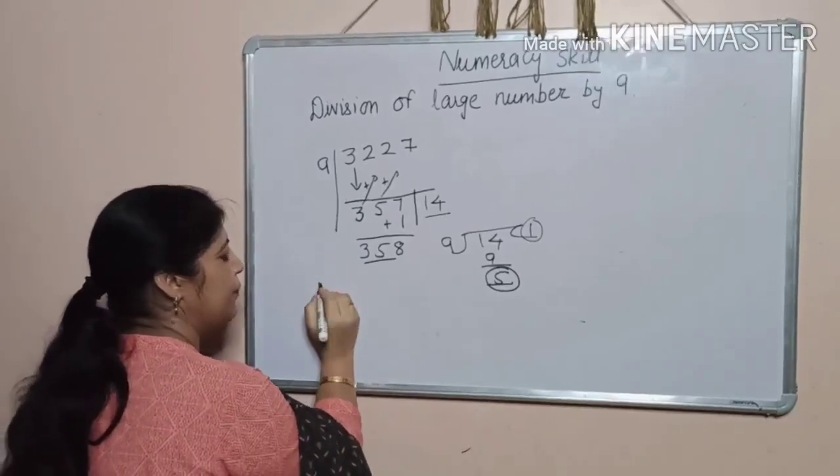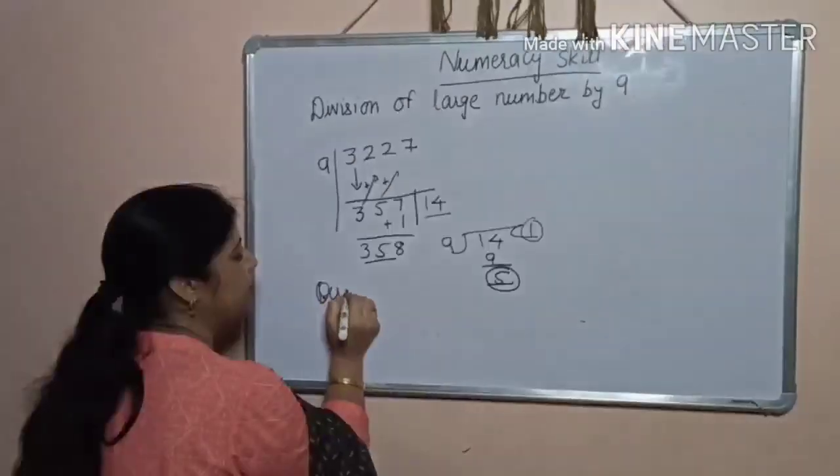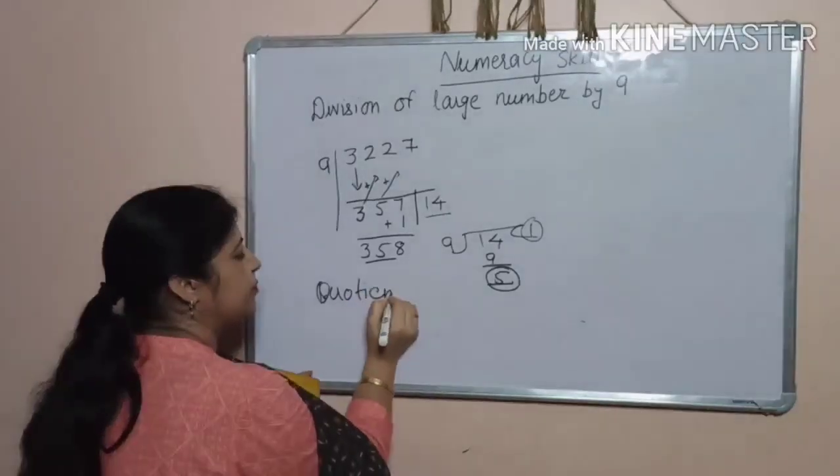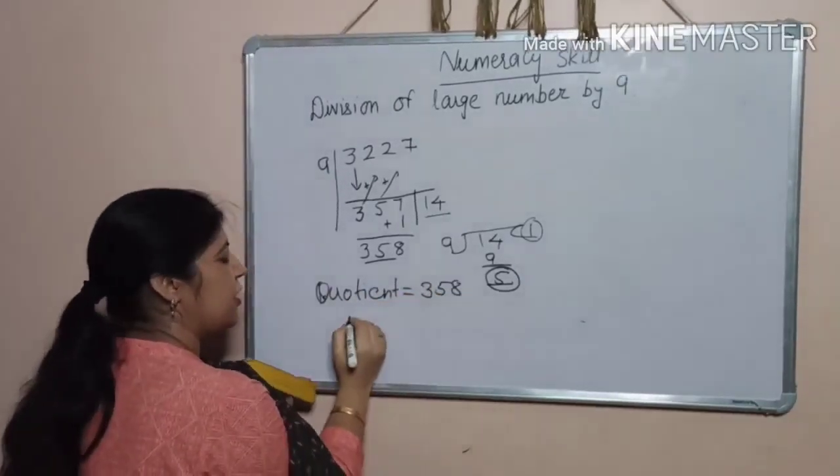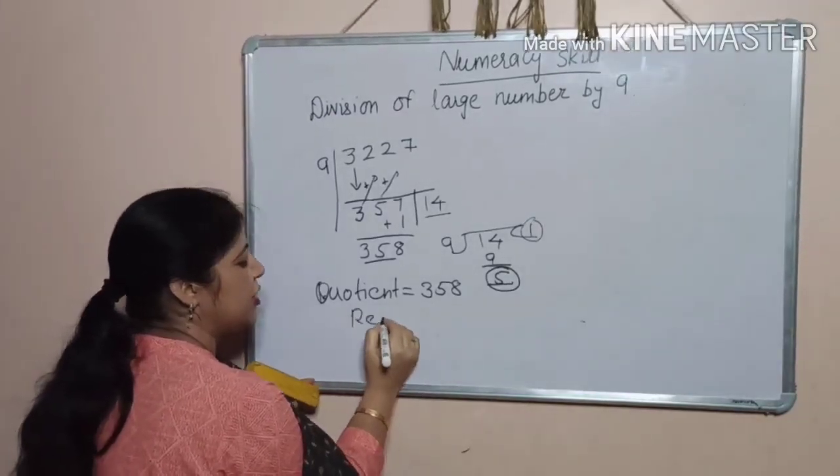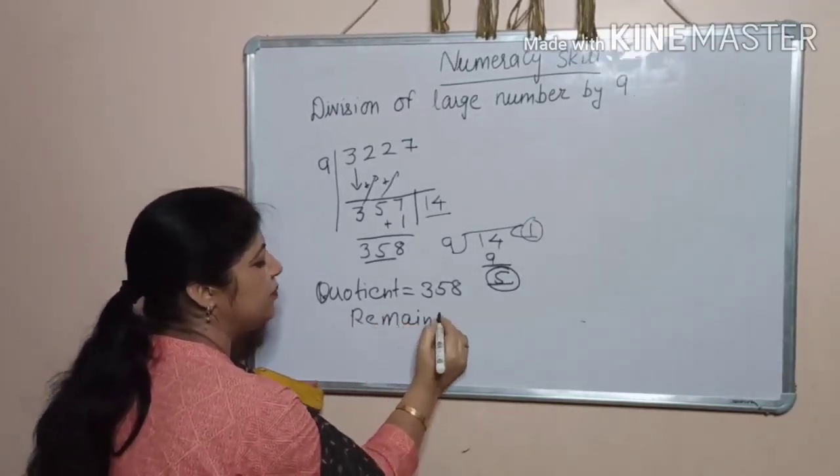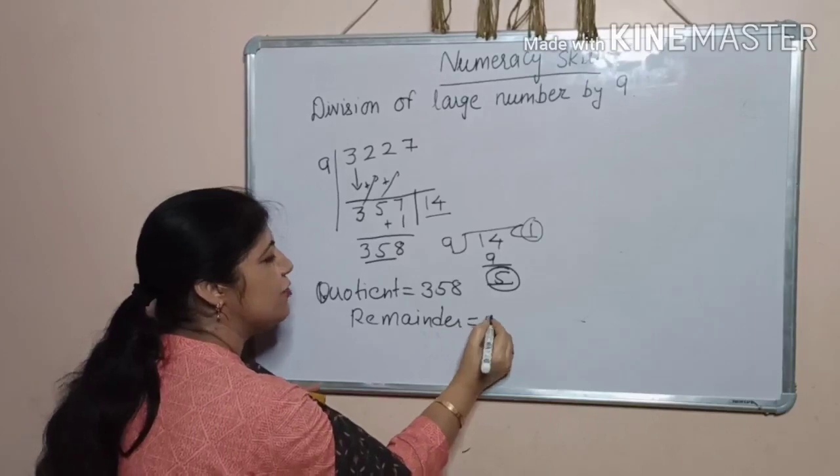358 and 5 will be the remainder. So, quotient 358 and remainder is 5.